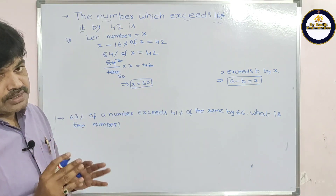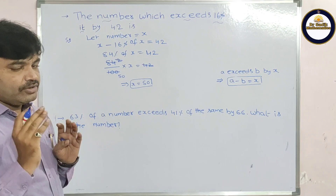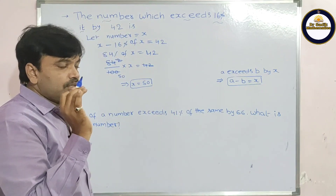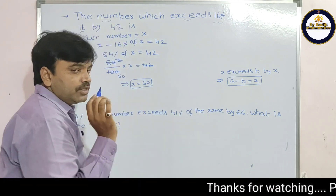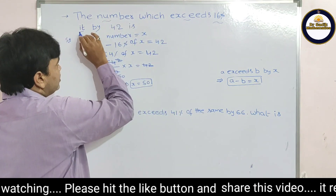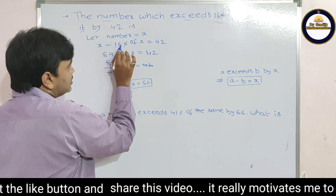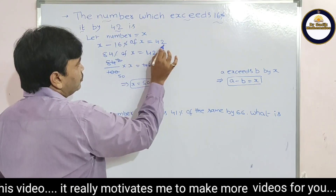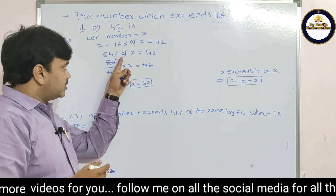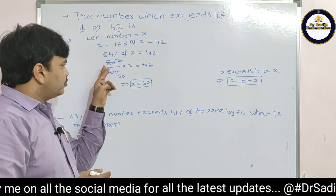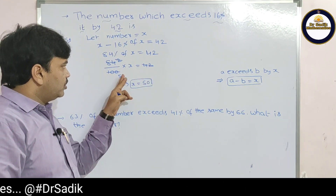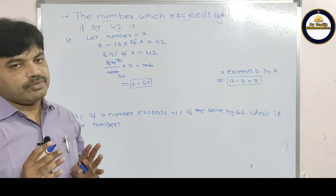So the number is 50. Once again: using a exceeds b by x means a minus b equals x. Here the number x exceeds 16% of x by 42, so x minus 16% of x equals 42. That gives 84% of x equals 42, so x equals 50.